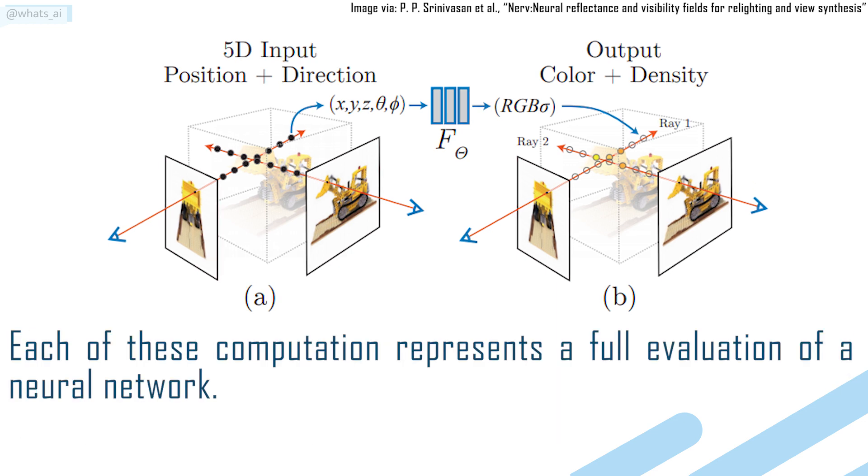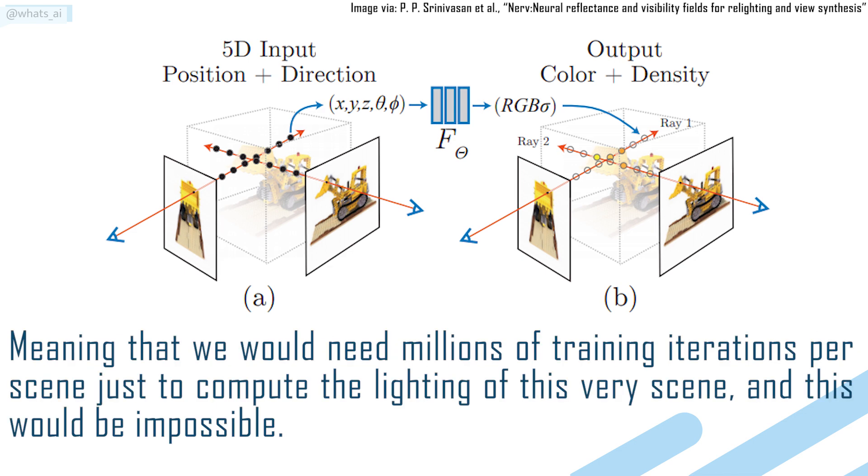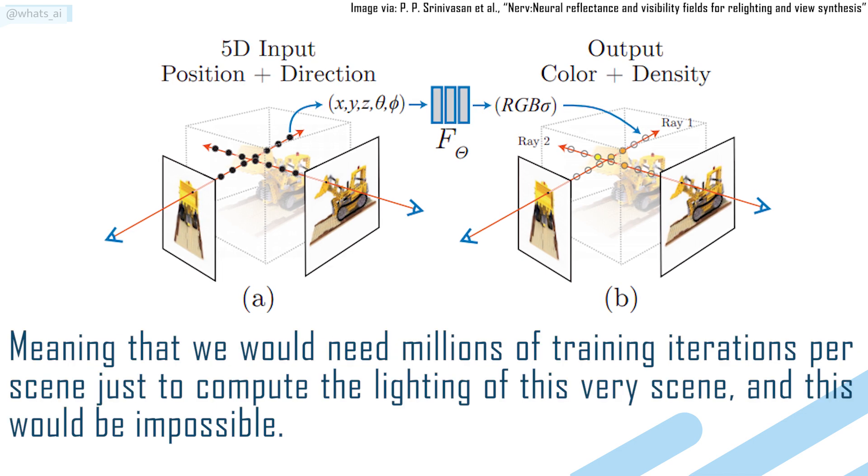Each of these computations represents a full evaluation of a neural network, meaning that we will need millions of training iterations per scene just to compute the lighting of this very scene. And this will be impossible.